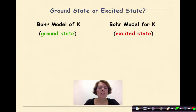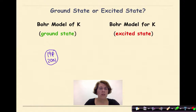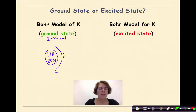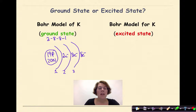Let's look at a Bohr model of potassium in the ground state versus a Bohr model in the excited state. We know that in the nucleus of potassium, we're going to have 19 protons and 20 neutrons. We also know that the ground state electron configuration for potassium is 2-8-8-1. So in my first principal energy level I have two electrons, second has eight, third has eight, and my fourth principal energy level has one electron, which is my valence electron.